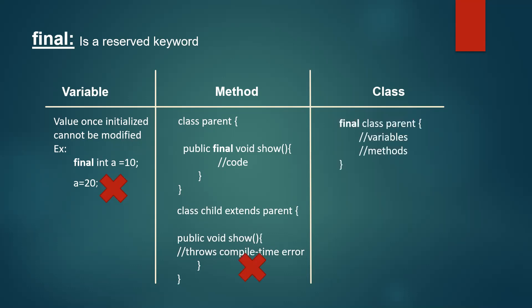Next, final class. If we declare a class as final, then that class can't be extended. We just need to prefix the final keyword before the class keyword. If we try to extend a final class, we get a compile time error again. So a final class cannot be extended. This is all about the final keyword.